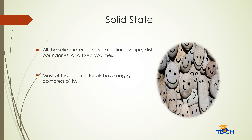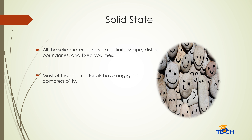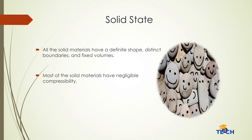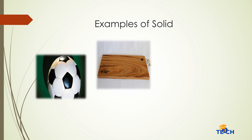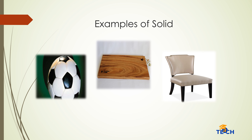Solid state: all solid materials have a definite shape, distinct boundaries, and fixed volumes. Most solid materials have negligible compressibility. Here are some examples of solids: ball, wooden board, and chair.